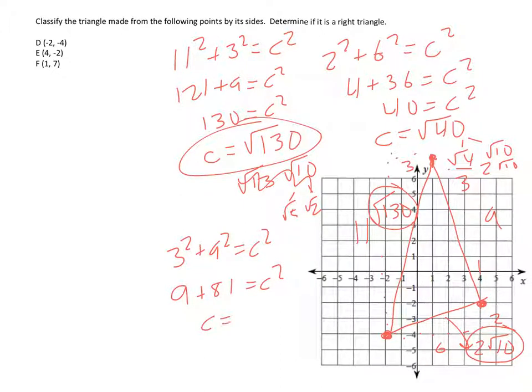So c ends up being the square root of 90, which we can simplify to the square root of 9 times the square root of 10, which is 3 square roots of 10. So those are the lengths. We've got 3 square roots of 10 over here, the square root of 130, and 2 square roots of 10.